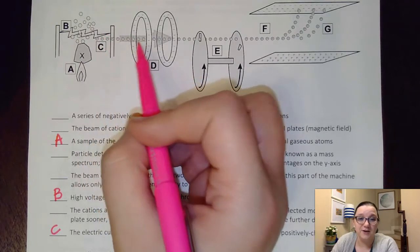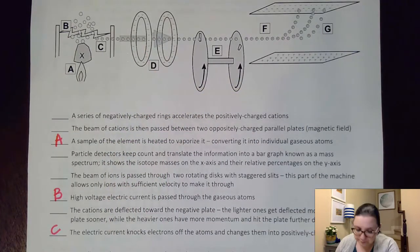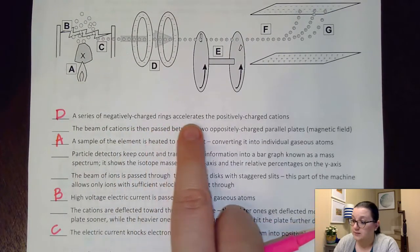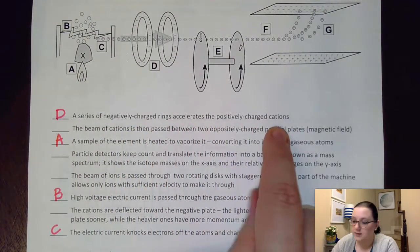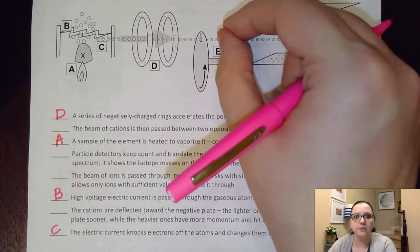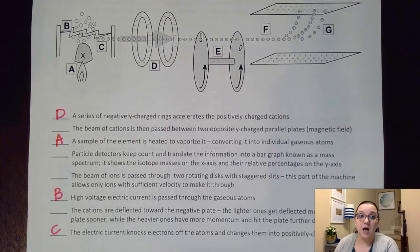Those are our cations that are now running through this machine. The next step is that a series of negatively charged rings accelerate the positively charged cations. So basically, the attraction of these rings helps to pull them through and causes those cations to speed up.